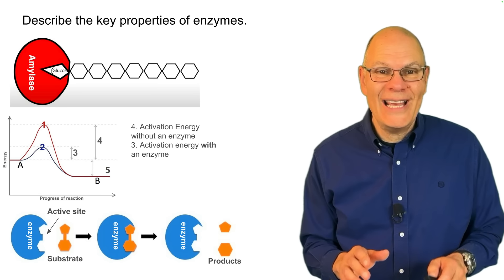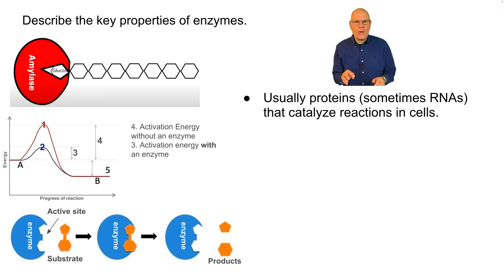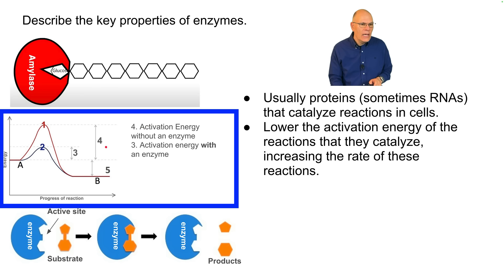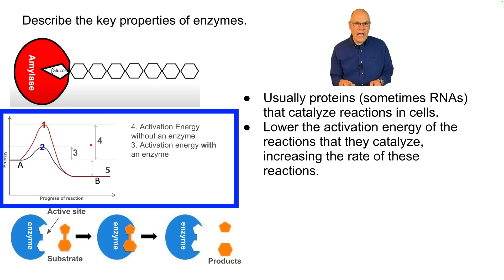Describe the key properties of enzymes. Enzymes are usually proteins, though there are some RNAs that act like enzymes and catalyze reactions in cells. They lower the activation energy of the reactions that they catalyze, increasing the rate of those reactions. In this diagram, you see a reaction catalyzed by an enzyme — number two — and a reaction that's not catalyzed at number one. The activation energy for the enzyme-catalyzed reaction is much less than the non-enzyme-catalyzed reaction.